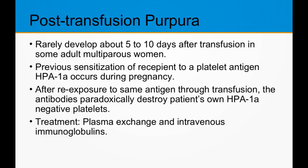The next delayed complication is post-transfusion purpura. It can rarely develop about 5 to 10 days after transfusion in some adult multiparous women. It is happening due to previous sensitization of the recipient to a platelet antigen called HPA1A, usually through pregnancy. After re-exposure to the same antigen through transfusion, the antibodies paradoxically destroy the patient's own platelets that were HPA1A negative. Treatment includes plasma exchange and intravenous immunoglobulins.